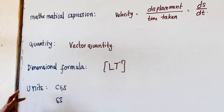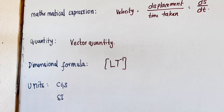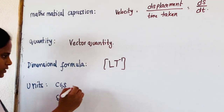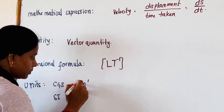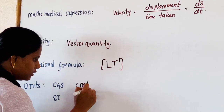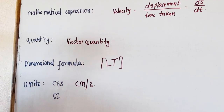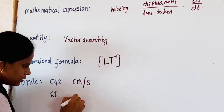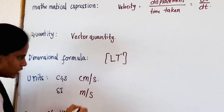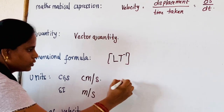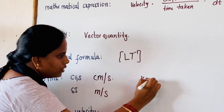Now we are going to see the units. The SI unit is the same as for speed — meter per second. The CGS unit is centimeter per second. And the generally used unit is kilometer per hour.